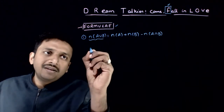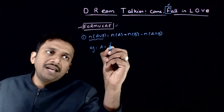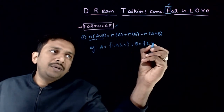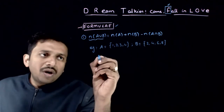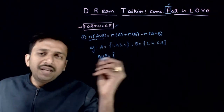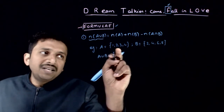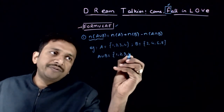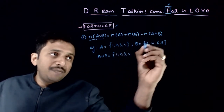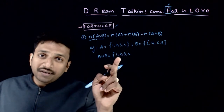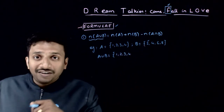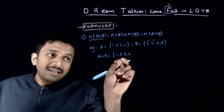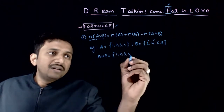Let us see this using an example. If you have the set A = {1, 2, 3, 4} and set B = {2, 4, 6, 8}, what is A union B? A union B is the elements which are either present in A or present in B — you need to combine these two sets. So you have 1, 2, 3, 4 from set A. Going to set B, the element 2 has already been included, so you do not need to write it twice.